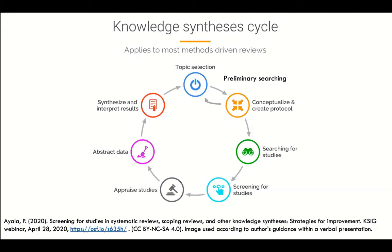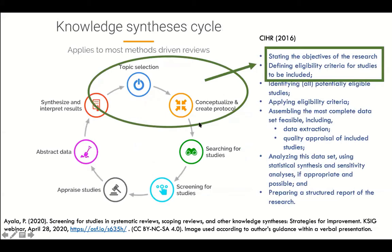You're not just going to be searching on the green step — searching for studies. You'll be doing a lot of searching ahead of your main search to scope out the territory before you do the scoping review, and that's so that you decide and realize what has already been done. Here I'm comparing the steps that Patricia listed out to CAHR steps.